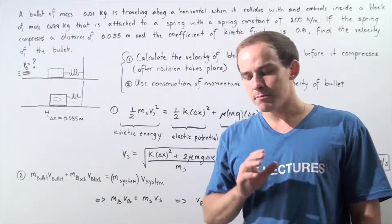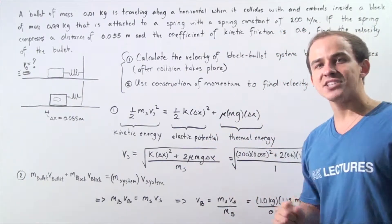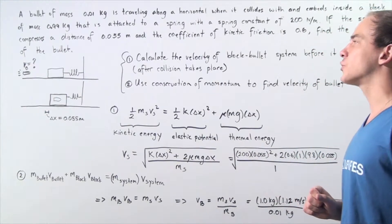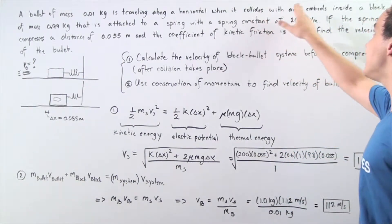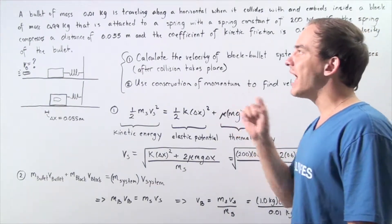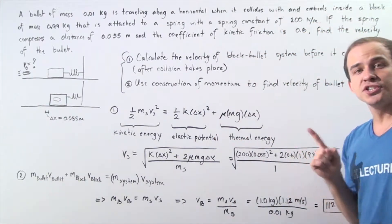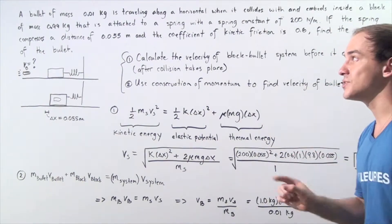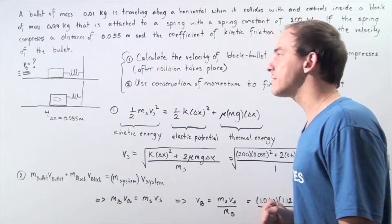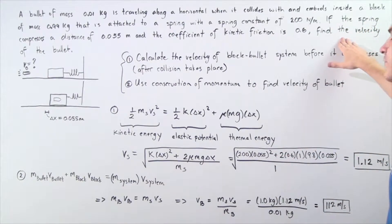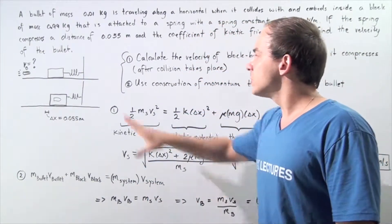Let's look at a second example dealing with a completely inelastic collision. We have a bullet of mass 0.01 kilograms traveling along a horizontal axis that collides with and embeds inside a block of mass 0.99 kilograms attached to a spring with a spring constant of 200. The spring compresses a distance of 0.055 meters and the coefficient of kinetic friction is 0.6. Let's look at our diagram.